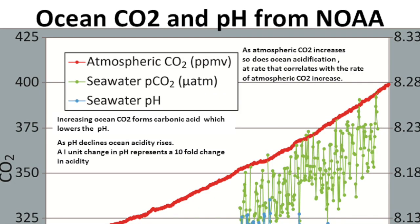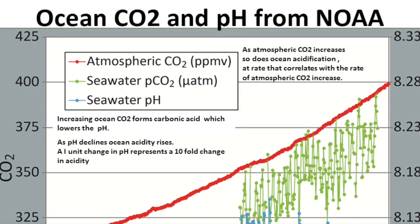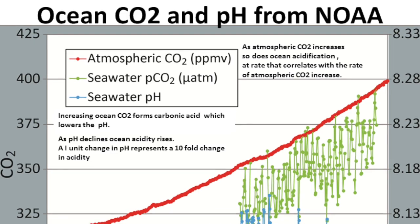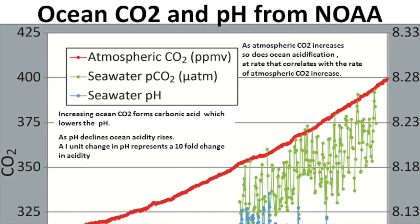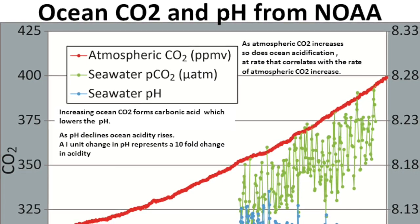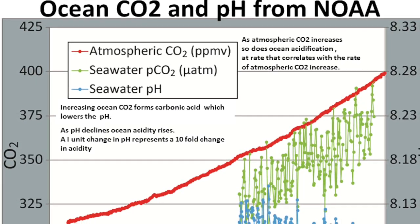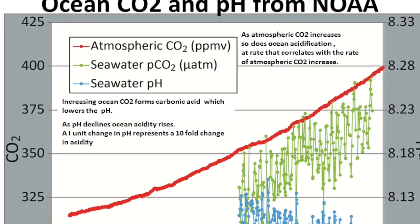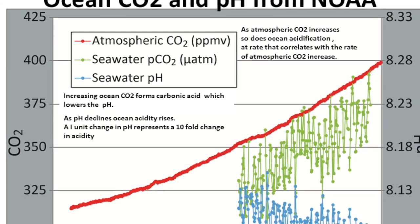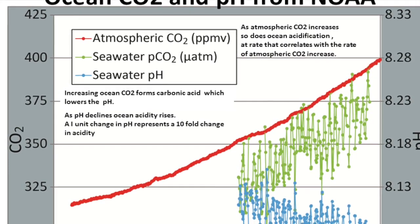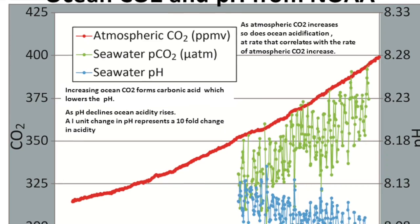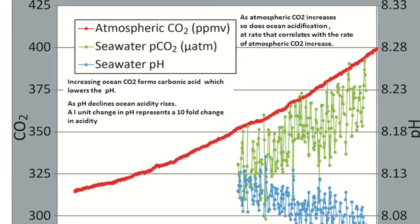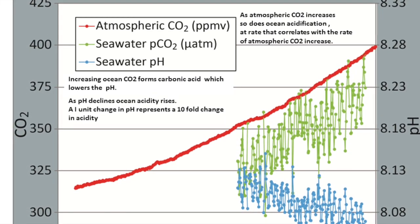pH measures if the water is basic or acidic. Seven and under is acidic, eight and over is basic. For certain bodies of water, the pH will be different. But for the ocean, it has to be a bit basic, so about 8.2.